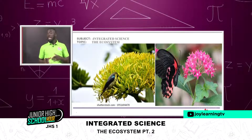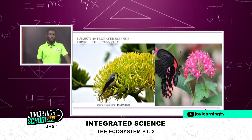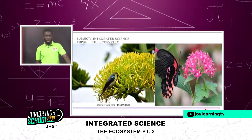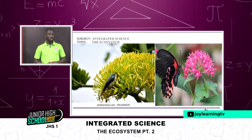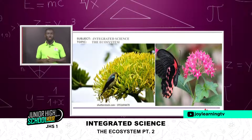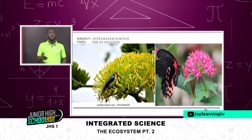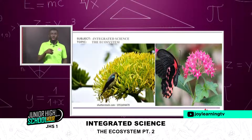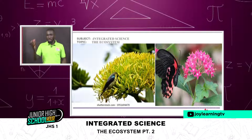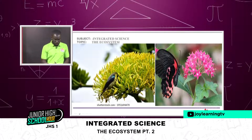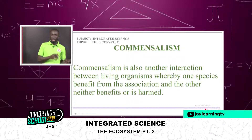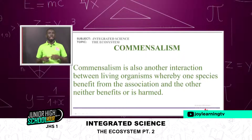I gave you two examples: a bird sucking nectar from a flower, and a butterfly doing the same. The bird and the butterfly are considered agents of pollination because they transfer pollen from plants to other areas, so that different species of the same plant may grow in other areas far from the parent plant. As these butterflies and birds suck the nectar, they accidentally carry pollen and transfer it to other areas.